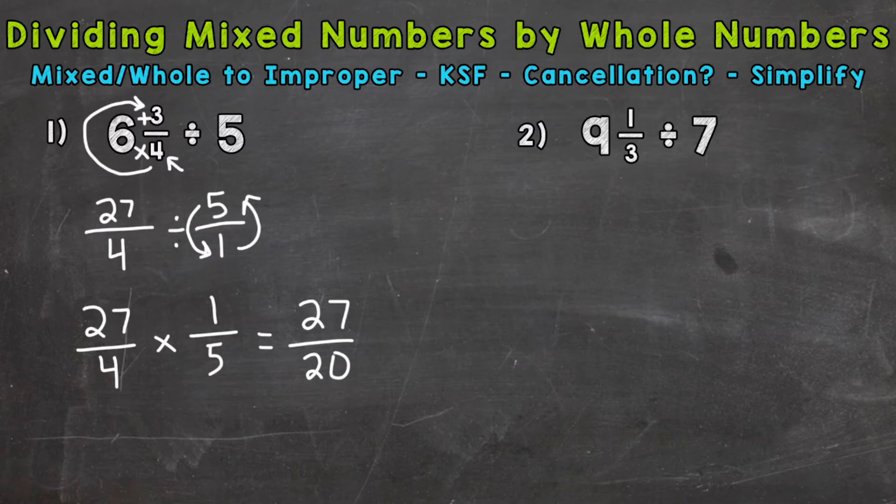So that is our answer, 27 over 20. But we don't want to leave it as an improper fraction. We want to convert our answer to a mixed number. So we do that by dividing the numerator, 27, by 20. So 27 divided by 20. How many whole groups of 20 out of 27? So let's write this out to better understand here. So 27 divided by 20. Well, 1 whole 20.